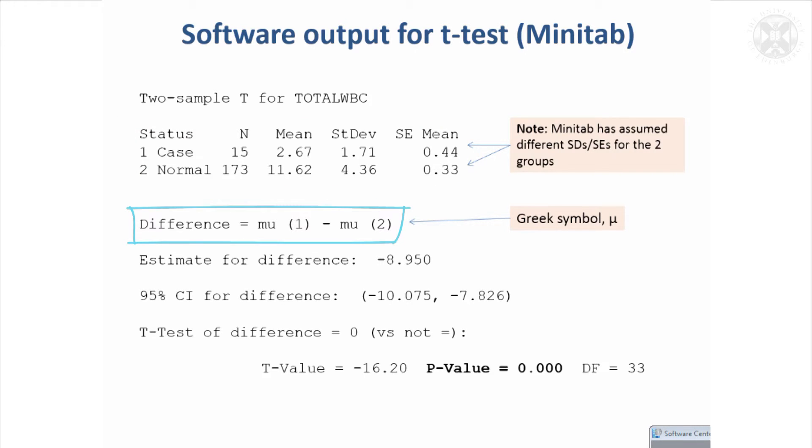This line's not very helpful. It just tells us that the difference is going to be mu1 minus mu2. You might think, well, what's mu1, mu2? It doesn't tell us. But Minitab has this habit of giving phonetic interpretations of Greek symbols. So this is meant to be mu, which people sometimes use to denote means. So that's not really very helpful. But it's saying the estimate for the difference, which is actually what we're talking about up there, minus 8.95, which is the difference in the means.